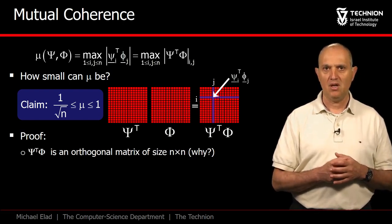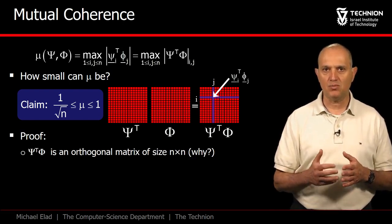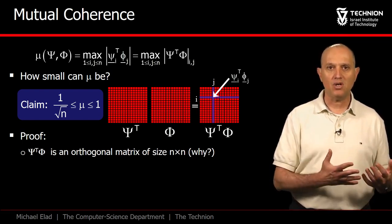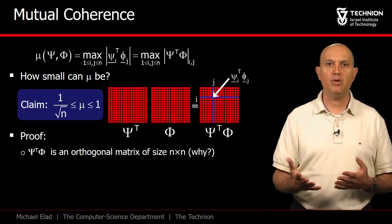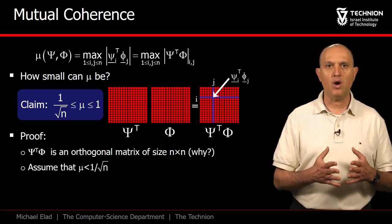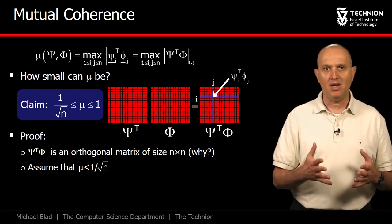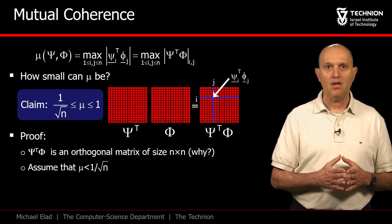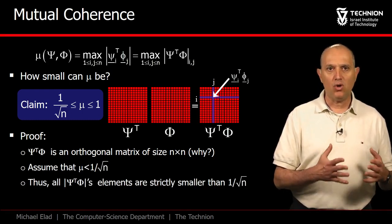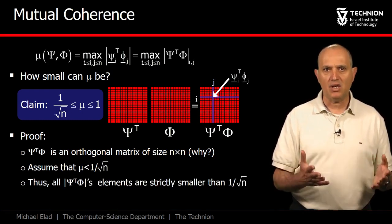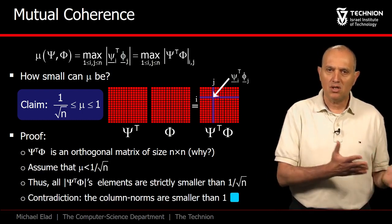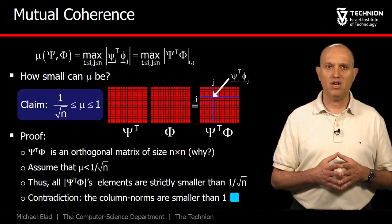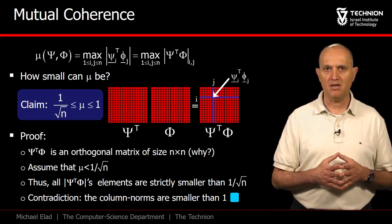The proof is nearly immediate. Remember that the matrix psi transpose phi is itself an orthogonal matrix, and thus each of its rows or columns must be L2 normalized. If we assume that the coherence is below 1 over square root of n, it implies that all the absolute entries in this matrix are below this value as well. Thus, when computing the norm of a column, any column, it will be strictly smaller than 1, posing a contradiction to the fact that this matrix is orthogonal. Therefore, the minimal possible value is 1 over square root of n, as claimed.